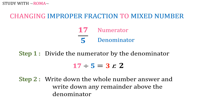Step 2: write down the whole number answer and write down any remainder above the denominator. So 17 over 5 is equal to 3 and 2 fifths.